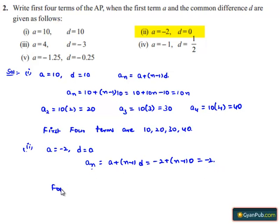Therefore, all the first four terms will be equal. The first four terms are -2, -2, -2, and -2.